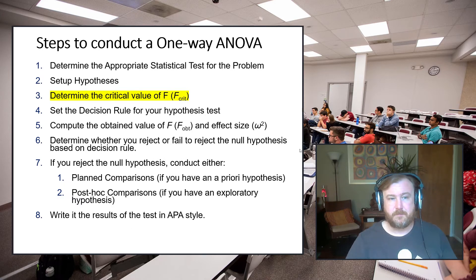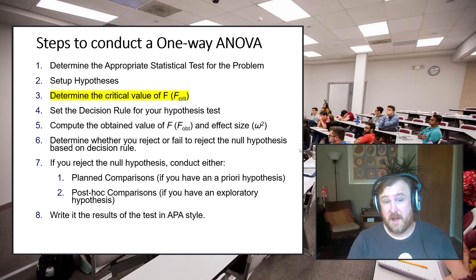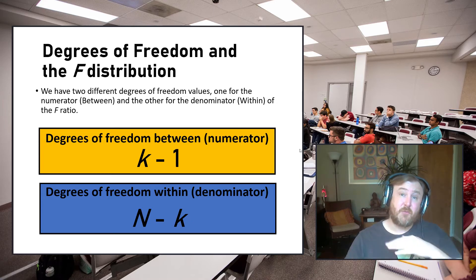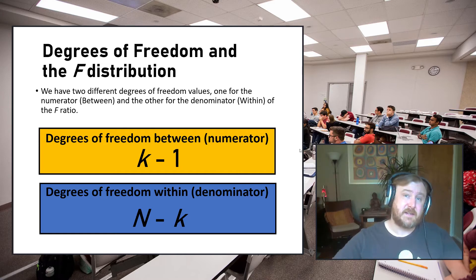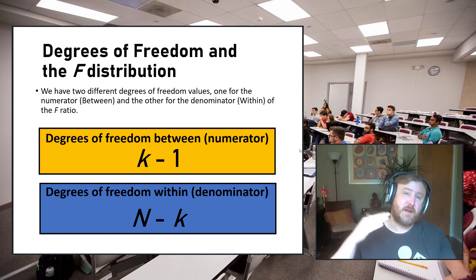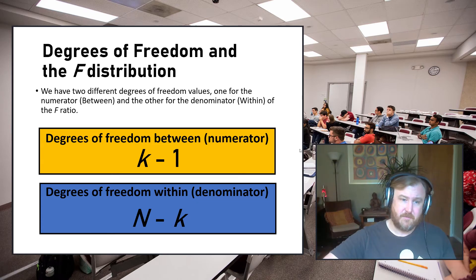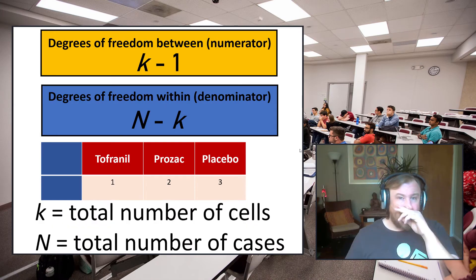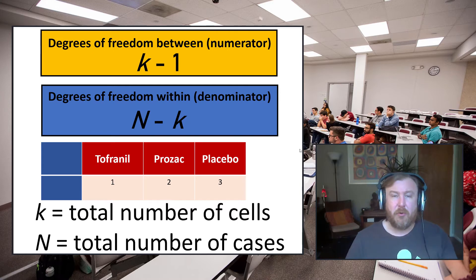Once we've set up our hypotheses, we determine the critical value of our F ratio — F-crit — very similar to t-crit, but degrees of freedom are computed differently. The F value is a ratio of variance explained by the independent variable over variance left unexplained, so we have a degrees of freedom value for the numerator and one for the denominator. Degrees of freedom for the numerator is k minus 1, and for the denominator is N minus k, where k is the total number of cells in the design.